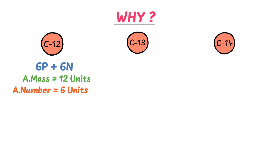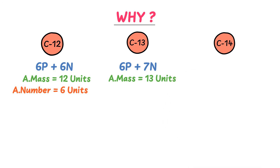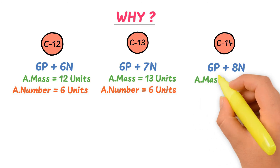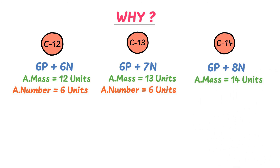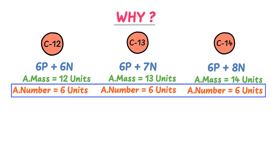In carbon-13 there are six protons and seven neutrons, so its atomic mass is 13 units and its atomic number is six because of six protons — so we call it carbon-13. Similarly, in carbon-14 there are six protons and eight neutrons, so its atomic mass is 14 units and its atomic number is again six because of six protons — hence we call it carbon-14.